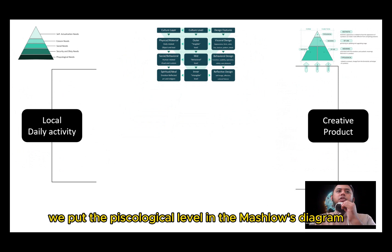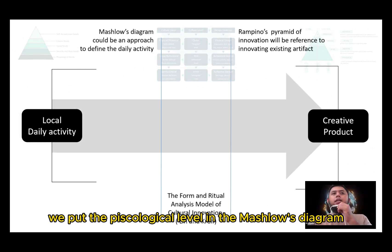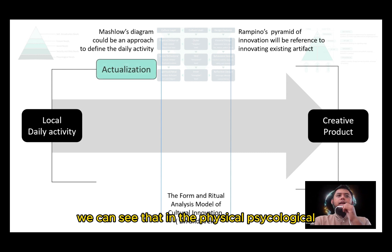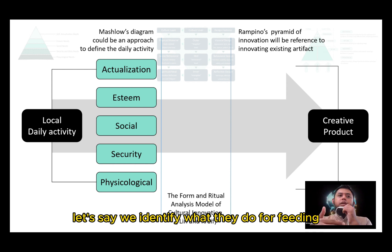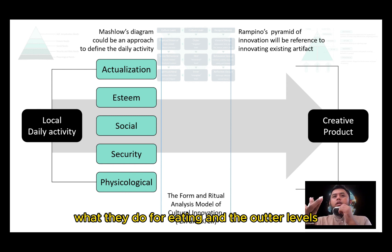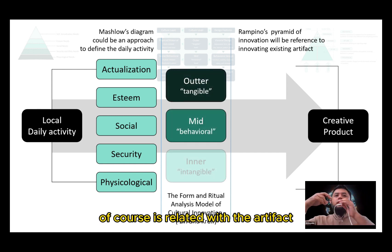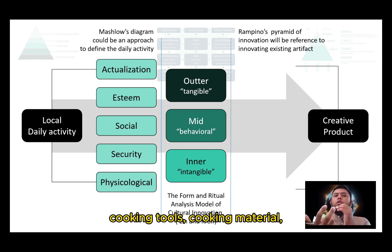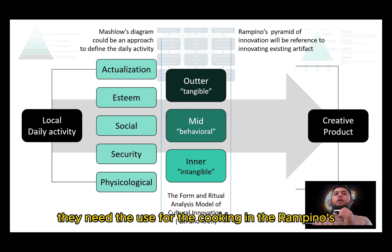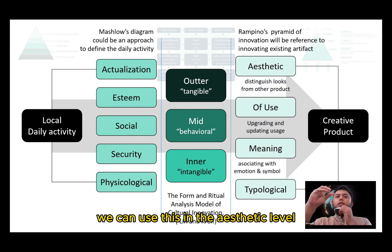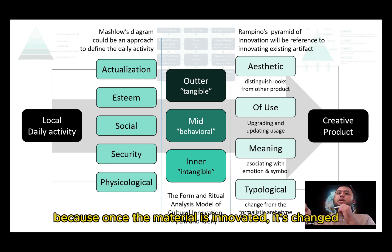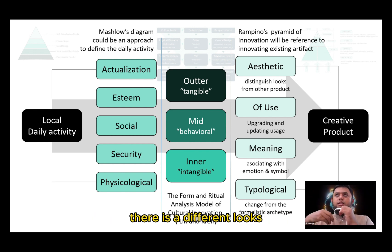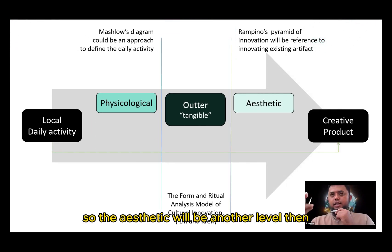For example, if we put the physiological level in the Maslow diagram, we can see that at the physiological level there is food, clothing, and shelter. We identify what they do for feeding and eating. At the tangible level, it relates to artifacts like cooking tools and cooking materials they use. In Rampino's framework, we can apply this at the aesthetic level — because once the material is innovated and changed, there is a different look, so the aesthetic becomes another level.